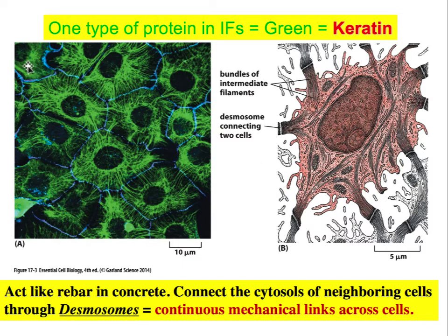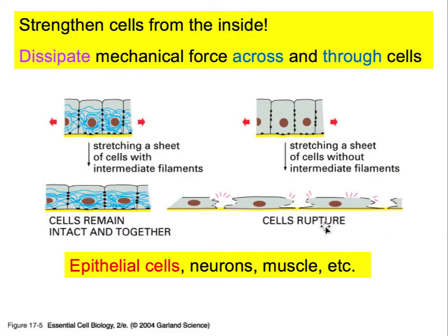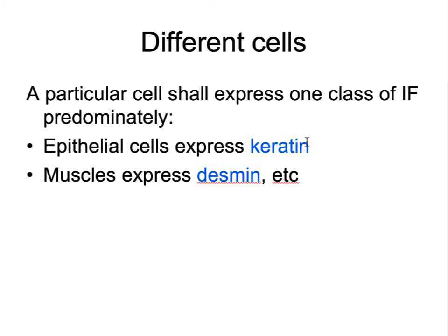The intermediate filaments of keratin transmit forces across the cell, around the nucleus, and into neighboring cells. If one cell is tugged, that force is transmitted across all neighboring cells to prevent rupture. The key functional word is 'dissipate' — intermediate filaments dissipate mechanical forces through cells into neighbors or surrounding connective tissue. Neurons and muscle cells also have intermediate filaments; muscle cells use desmin rather than keratin.